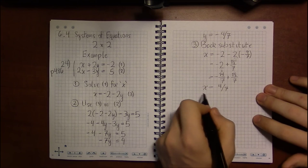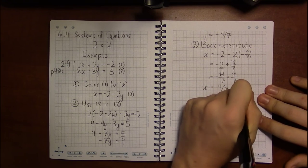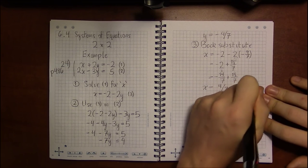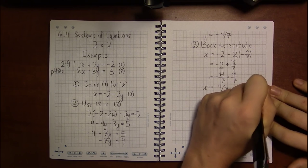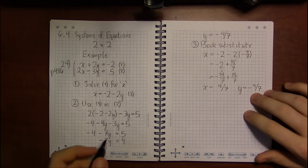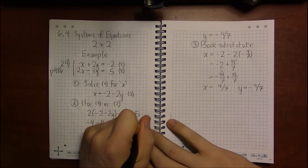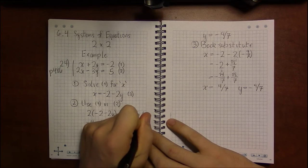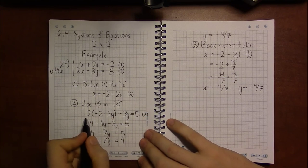This is the value for x that we've arrived at. And the value for y, as we found earlier, was minus 9 sevenths. And I'll just note here, this was substituting back into equation 3.